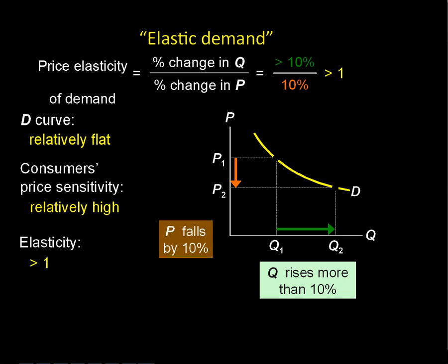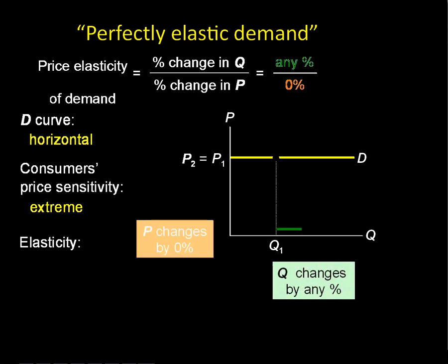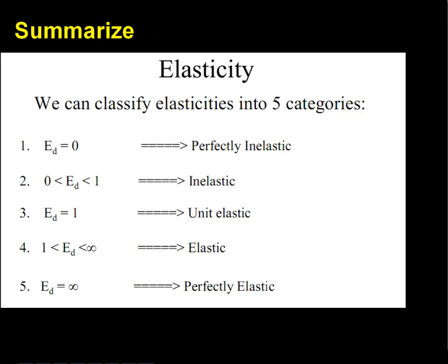Elastic demand is pretty common — the demand curve is relatively flat. The price falls by 10% and we get a bigger jump in quantity, so the result is any number higher than one. Finally, perfectly elastic demand does exist for an individual firm — the price never changes but the consumer buys as much as they can, so the number is infinity. To recap: zero is perfectly inelastic, below one is inelastic, exactly one is unitary elastic, and anything above one is elastic.